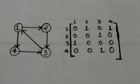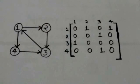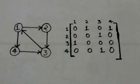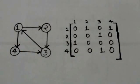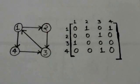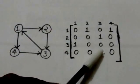There is an arc from vertex 2 to vertex 3. Therefore in the adjacency matrix the entry at the second row and third column is 1. There is an arc from vertex 3 to vertex 1. Therefore in the adjacency matrix the entry at the third row and first column is 1. There is an arc from vertex 4 to vertex 3. Therefore in the adjacency matrix the entry at the fourth row and third column is 1.